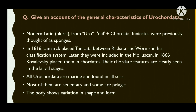Urochordata: 'uro' means tail, originating from a Latin word, and 'chordata' is also from a Latin word meaning cord. Tunicates were previously thought of as sponges in classification systems; later they were included in the mollusca. In 1866, Kovaleski placed them in chordates. Their chordate features are clearly seen in the larval stages.